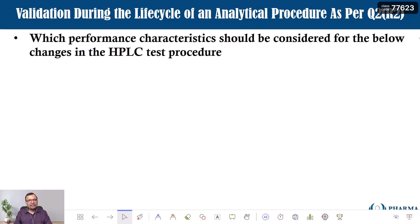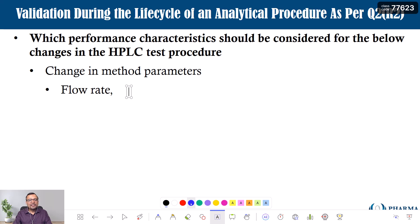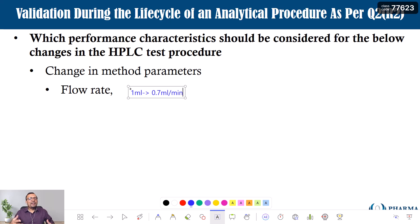Let us begin the discussion on which performance characteristics should be considered for changes in the HPLC procedure. The first change could be a change in method parameters — there are different method parameters like flow rate, column temperature, and detection wavelength. We will try to understand the impact of each change on method validation. The first change is the change in flow rate. Suppose your initial flow rate is 1 ml/min and you are changing it to 0.7 ml/min. The reason behind this change must first be understood before concluding on the performance characteristics.